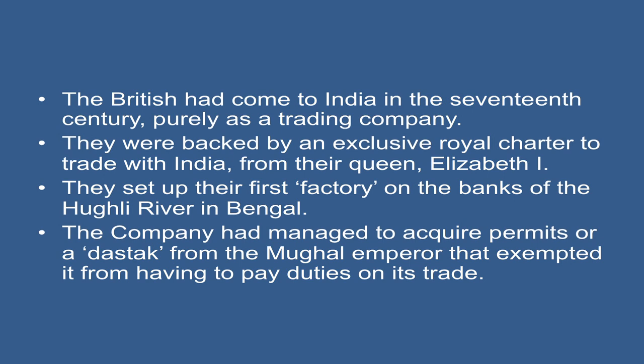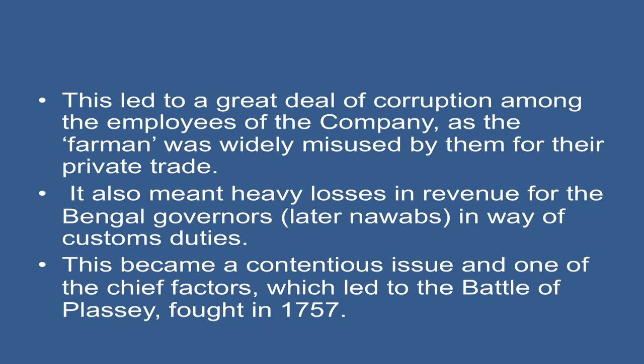They set up their first factory on the banks of the Hugli River in Bengal. The company had managed to acquire permits, or a dustak, from the Mughal emperor that exempted it from having to pay duties on its trade. This led to a great deal of corruption among the employees of the company, as the firman was widely misused by them for their private trade, resulting in heavy losses in revenue for the Bengal governors, later Nawabs, in the way of custom duties.